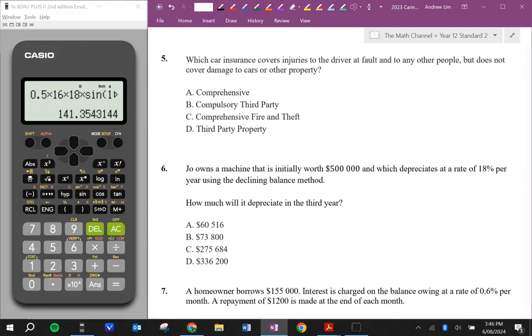Which car insurance covers injuries to the driver at fault and to any other people, but does not cover damage to cars or other property. So I'm going to say that this one will be compulsory third party. Because that covers other people, but not damage to cars.